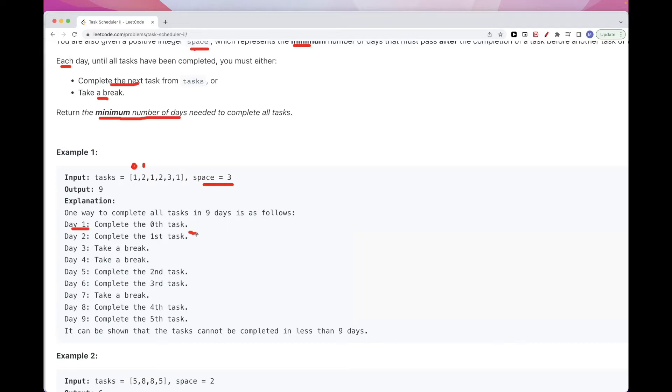But right now, we already only did one day. There is only one day space, so we need to do two more. And we can't do the task until those two more days go by, and so we need to take a break during those two days. So that's why the space here is three, okay?